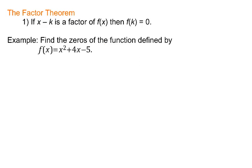In the Factor Theorem, one way to read it is that if x minus k is a factor of f(x), then f(k) is 0. Here I have a function for you. Suppose that my task is to find the zeros of the function.